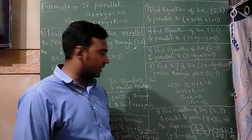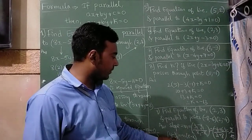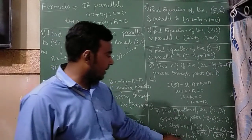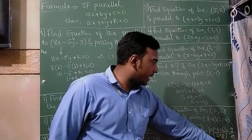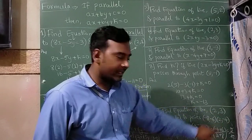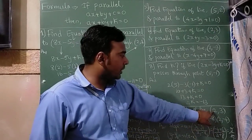So to find the equation of the line the formula is y minus y1 is equal to m into x minus x1. Here m value we have got 1 by 5. Y1 we need to take this 3 and x1 we need to take this 2.